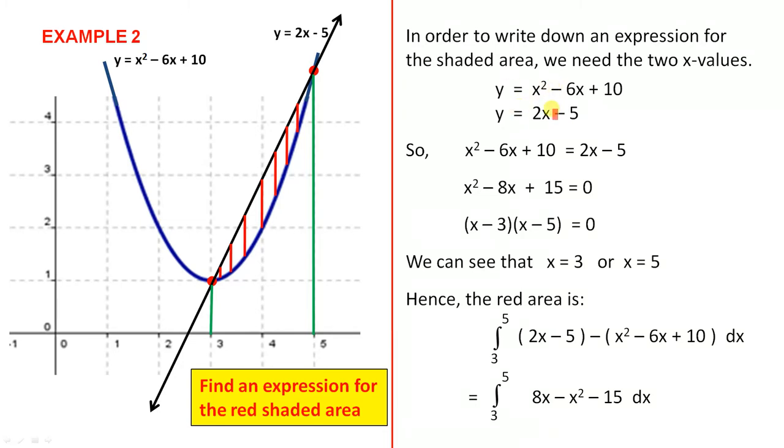In order to write down an expression for the shaded area, we need the two x values. So these are the two functions. We let them equal each other, since they're both equal to y. We do some simplification to arrive at x² minus 8x plus 15 equals 0. We factorize: (x minus 3)(x minus 5) equals 0. We can see that x is 3 or 5. So these are the x values of the intersection.